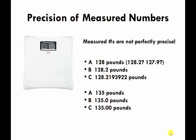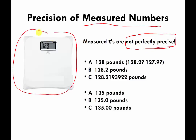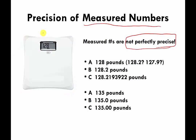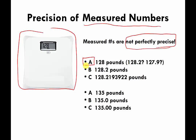In the previous video we talked about the difference between measured numbers and exact numbers. Measured numbers are not perfectly precise, and I want to go over that in more detail using an example of a scale. Pretend I weigh somewhere around 128 pounds. Scale A says I weigh 128 pounds, but I might actually weigh 128.2 or 127.9 — this scale is only good down to the ones place.